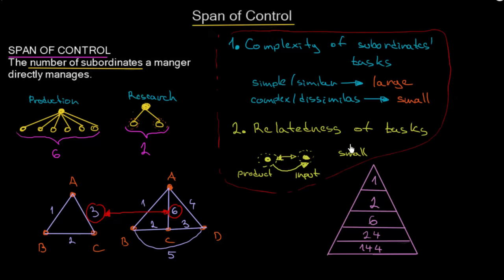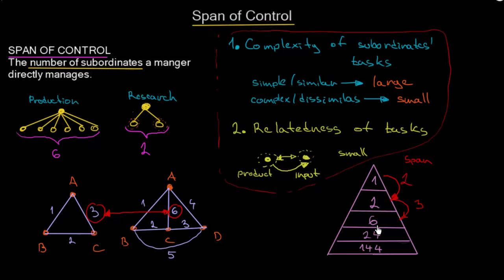The complexity of subordinates' tasks increases as we go up the hierarchy. The CEO oversees divisional managers — one responsible for medical research, another for producing food — so tasks are complex and potentially related. That's why at the top the span of control is just two. As we go down the hierarchy, both complexity and relatedness decrease, so we can increase the span of control: from two to three, then to four, and finally to six at the workforce level.